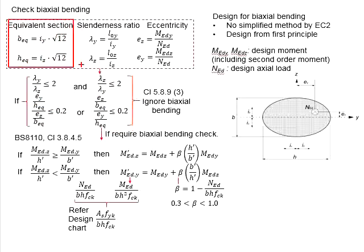There are equivalent sections, slenderness ratio, and eccentricity. The equivalent sections, b_eq and h_eq, are determined by the radius of gyration in terms of y-y and z-z multiplied by square root 12. The slenderness ratio in terms of the y and z axis are given in the formula here as functions of effective length to the axis divided by the radius of gyration. The eccentricity here is determined by the formula here, which is basically a ratio of M_ED divided by N_ED.